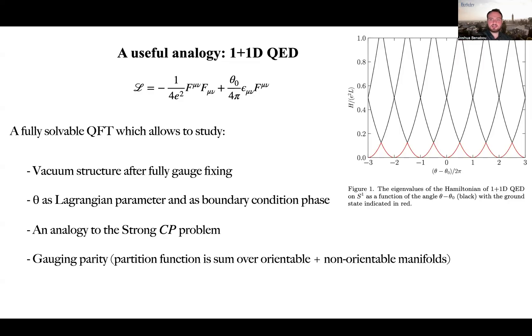and also allows us to show that theta can emerge from an extra-dimensional UV completion in analogy with the Aharonov-Bohm effect. In our paper, we also highlight that this theory exhibits a strong CP problem and that gauging parity solves that problem.